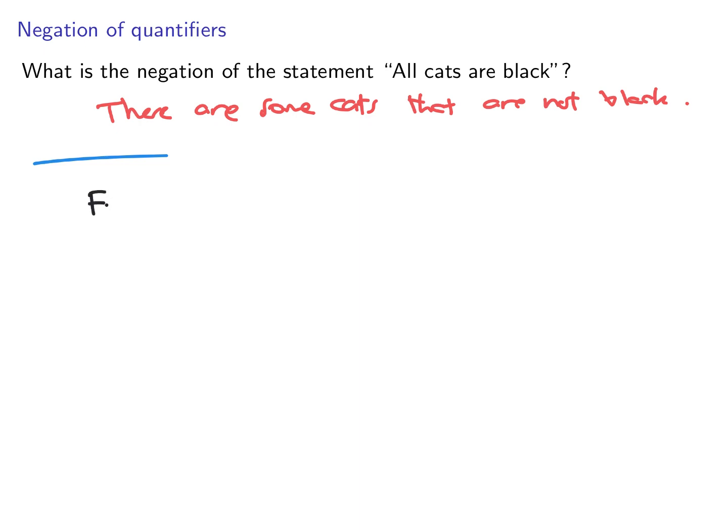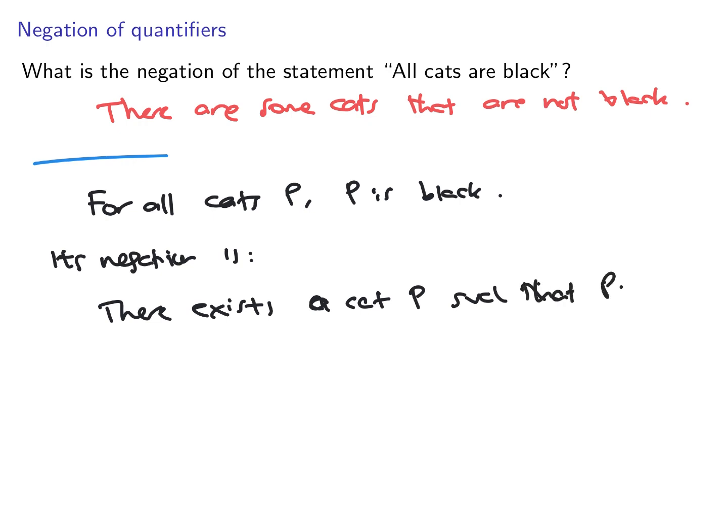So, for all cats P, P is black. This is the original statement written properly using quantifier. And the negation of this, its negation, is there exists a cat P such that P is not black.